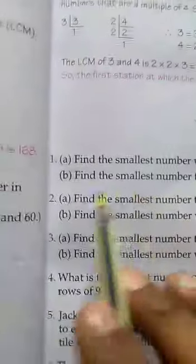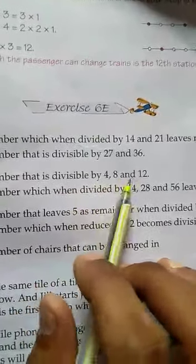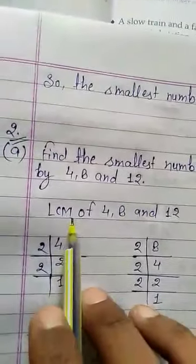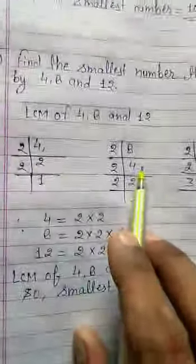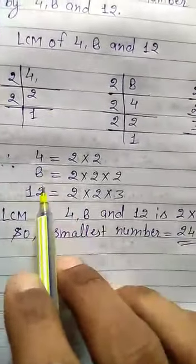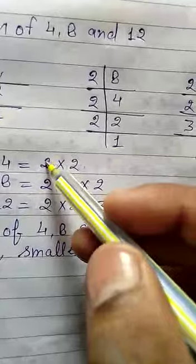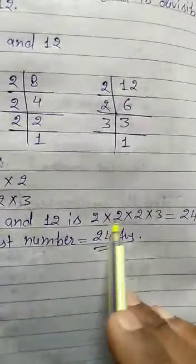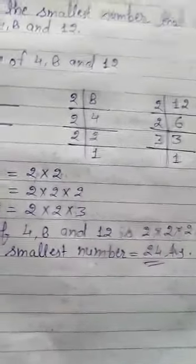Now students, Question 2 also has 2 parts. Part A of Question 2: Find the smallest number that is divisible by 4, 8, and 12. Again we will find the LCM of 4, 8, and 12. Write question 2A, then find the factors of 4, 8, and 12. LCM: 2 has a pair of three 2s, and there is a single 3. 2 × 2 × 2 × 3 = 24. So the smallest number equals 24. This is the answer.